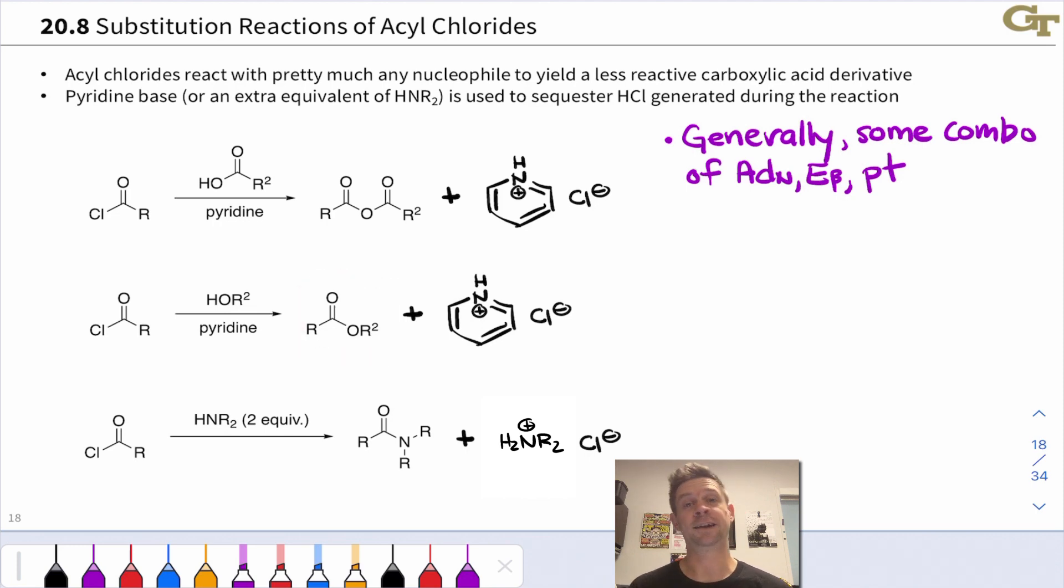If we take an acyl chloride and treat with an amine, here we can use two equivalents of a primary or secondary amine, we end up with an amide product and this is again a nucleophilic acyl substitution with the amino nucleophile displacing chloride to generate the amide product.